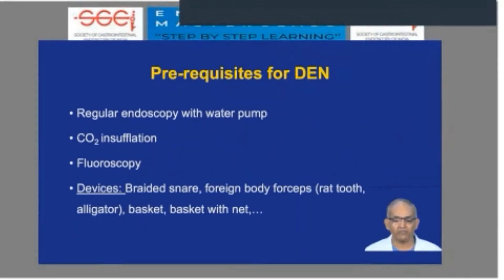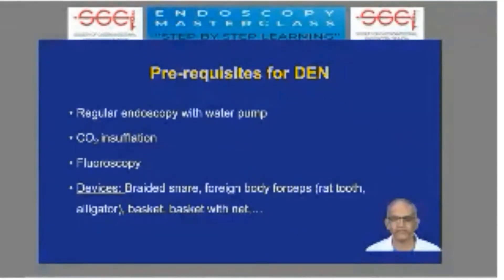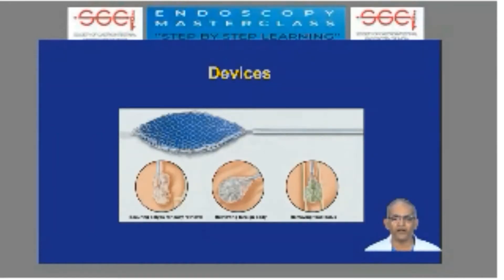The armamentarium we need to keep ready includes a regular endoscope with a water pump, carbon dioxide for insufflation, and fluoroscopy which is always useful. The devices commonly used are braided snare, foreign body forceps, and baskets or baskets with nets. These are borrowed from ERCP or foreign body removal tools, and one of the important devices is a Roth Net.